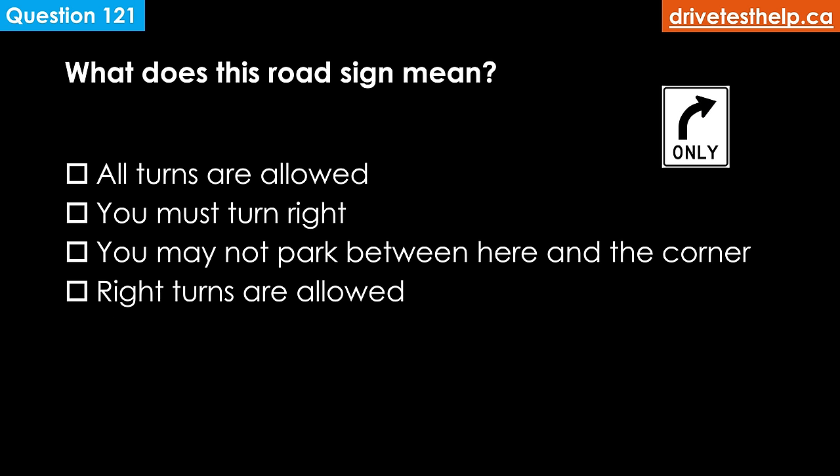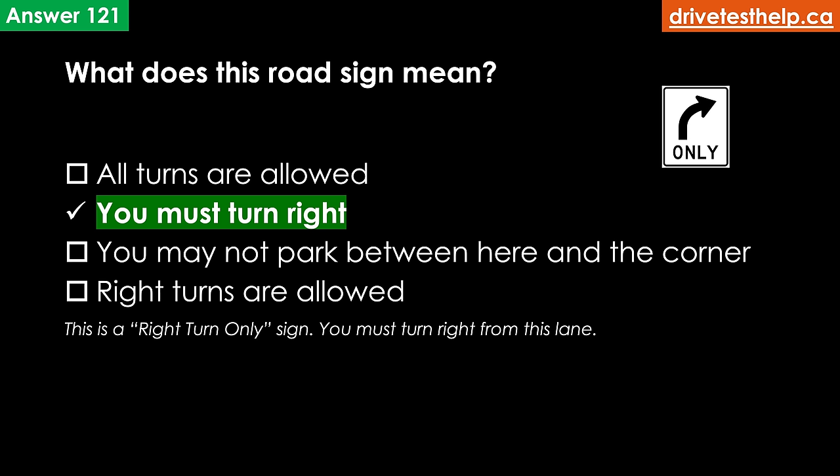What does this road sign mean? Options: all turns are allowed; you must turn right; you may not park between here and the next sign; right turns are allowed. The correct answer is you must turn right. This is a right turn only sign — you must turn right from this lane.